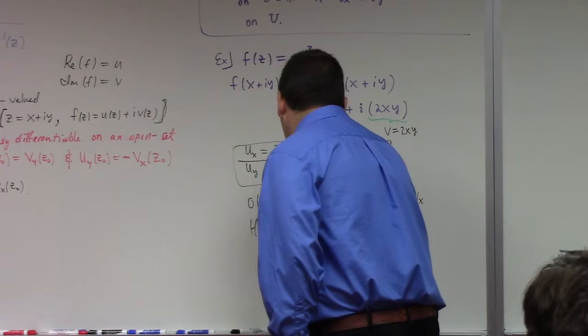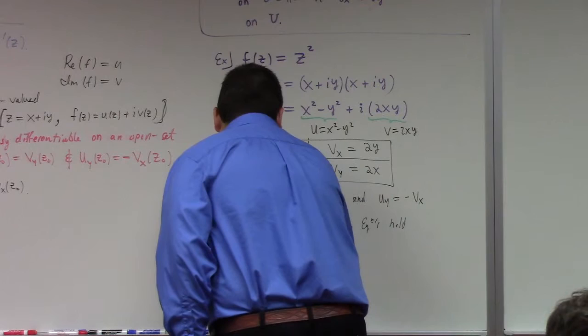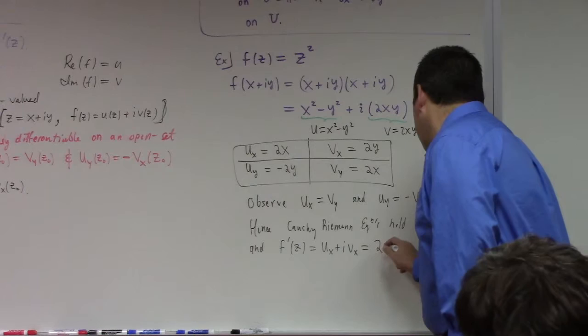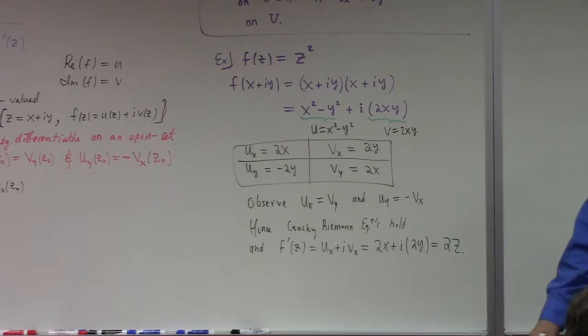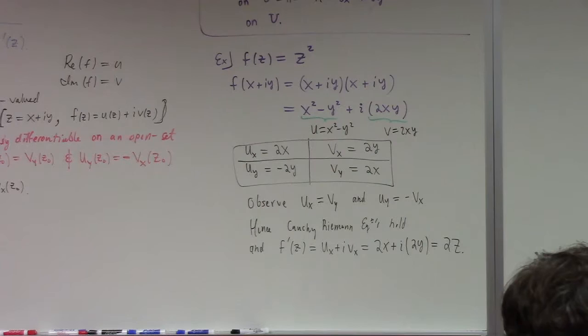Hence f prime(z) equals u_x plus i·v_x, which in this case is 2x plus i·2y, which we can write as 2z. Shockingly, the derivative of z² is 2z — no surprise there. But this method is radically different from what we've been doing: do you see a limit anywhere? No limits.